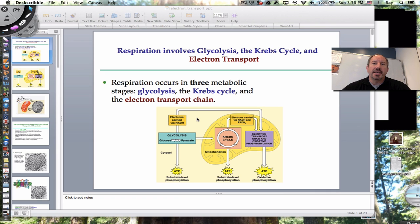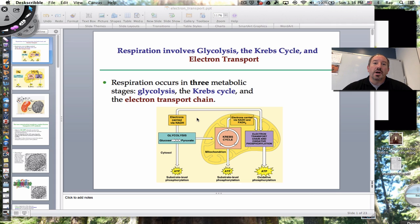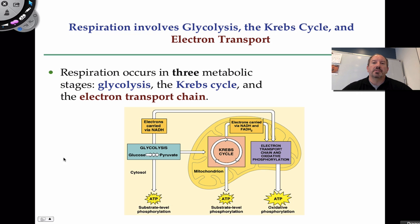Hi everyone, it's Mr. Sinti, and I'm going to be talking to you today about the last part of aerobic cell respiration, which is the electron transport chain, also called the electron transport system. This is going to be the culmination of three biochemical pathways — glycolysis, the Krebs cycle, and the electron transport system. So let's jump right into that.